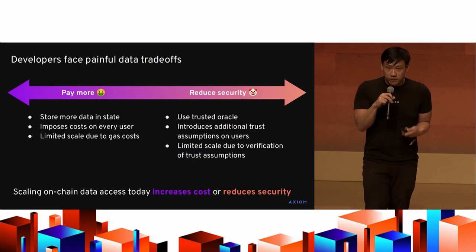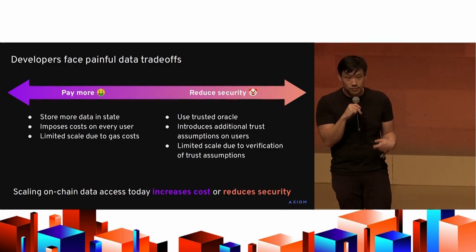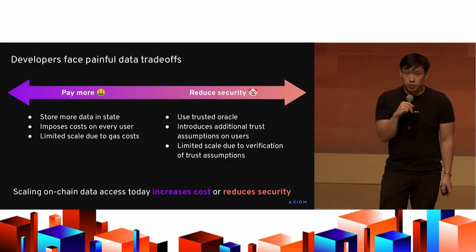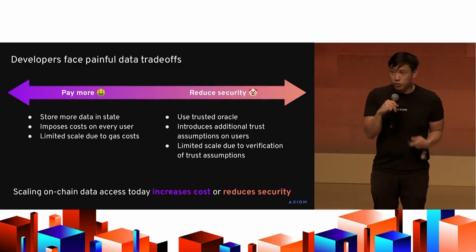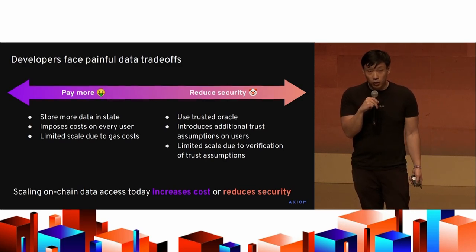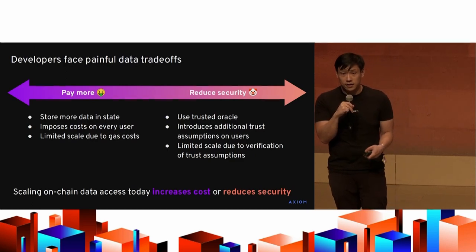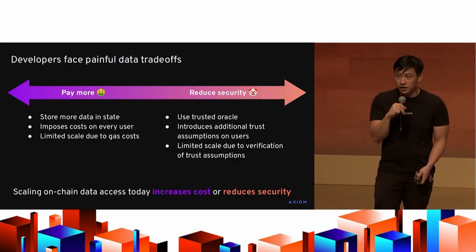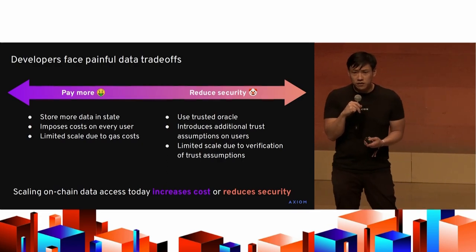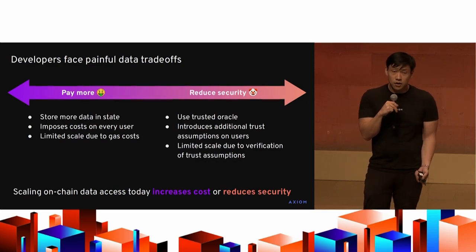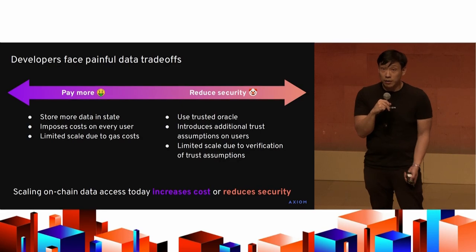Developers are very creative and work around this in many ways today. They face a trade-off between putting more data in state and paying for that, or reducing their security somewhat and relying on trusted oracles — which in many cases is a fancy way of saying the team itself puts the relevant data on-chain in a fully trusted way. Developers who want to scale data access today really have to trade off between increasing cost or reducing security.